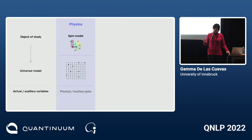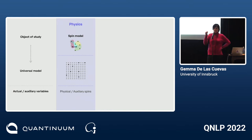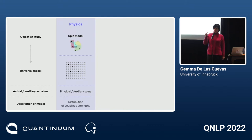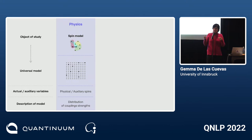We have actual and auxiliary variables. In essence, this universal model has an extended domain — you can think of the additional part of the domain as hyperparameters in machine learning. The description of the original model is instantiated into the values, into the distribution of coupling strengths and spin configurations of the auxiliary spins.